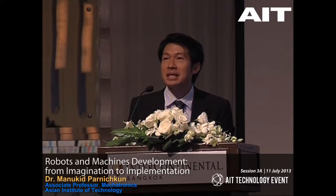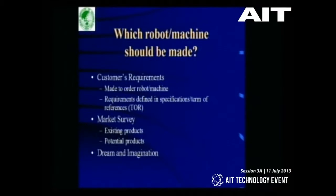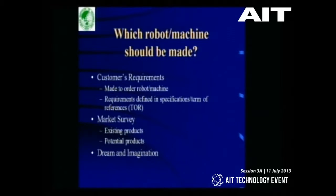When thinking about making new machines or robots, there are three major reasons. First, if you have customers who order a machine — this is the made-to-order type. We develop only one or very few units, so the cost per unit is quite expensive. The customer gives all the details and specifications in a TOR, and we as developers have to meet all specifications — they don't care how, but all requirements must be met.